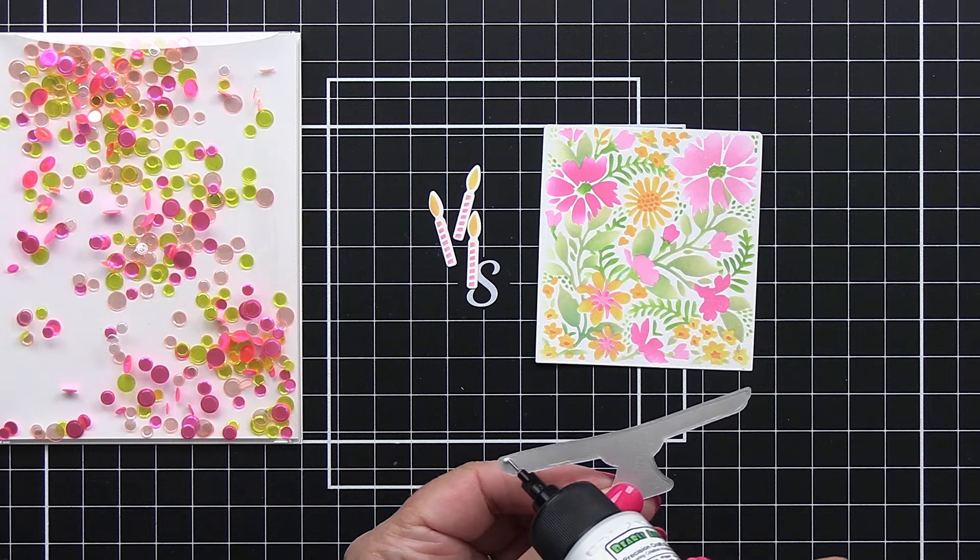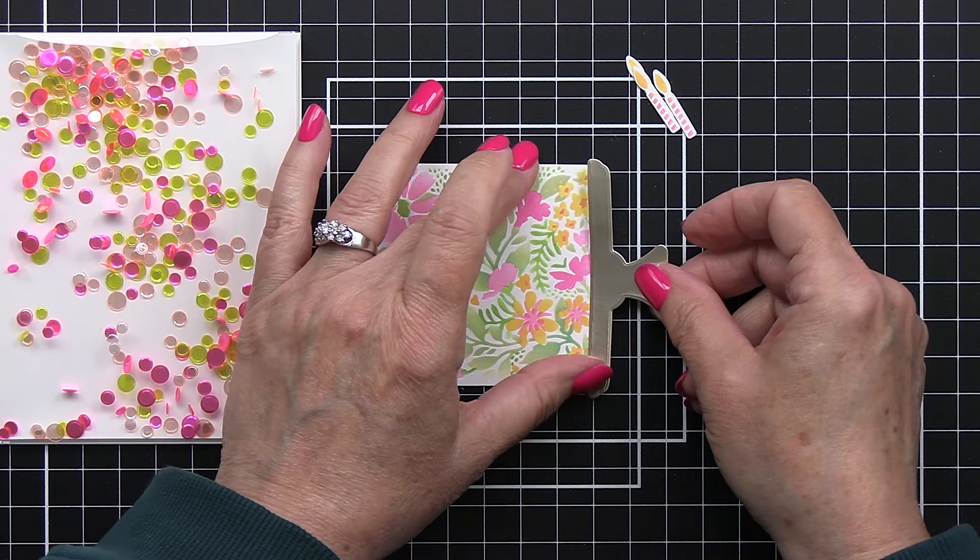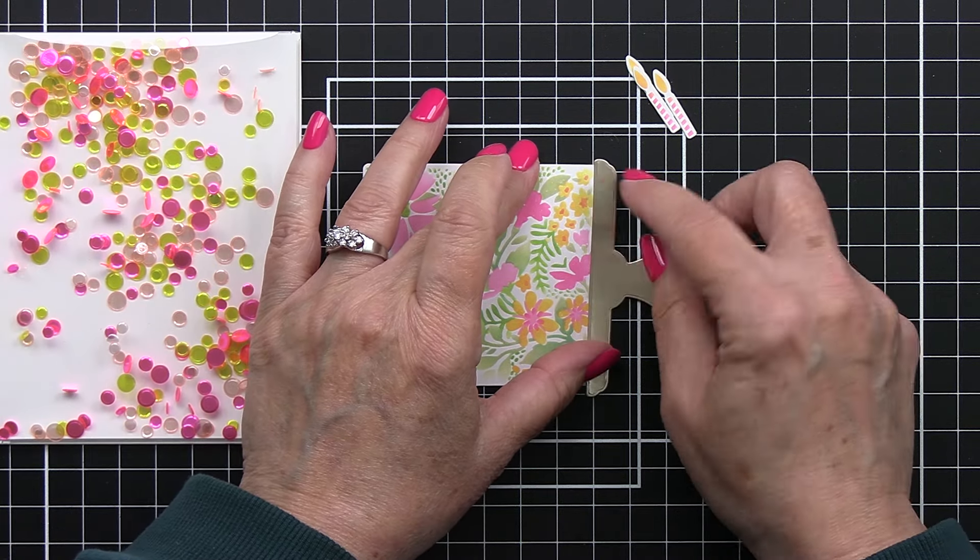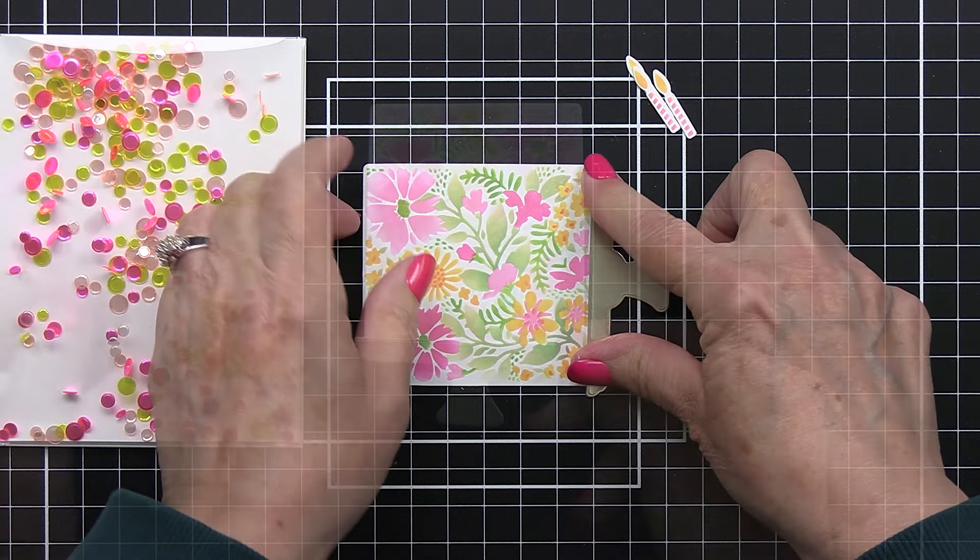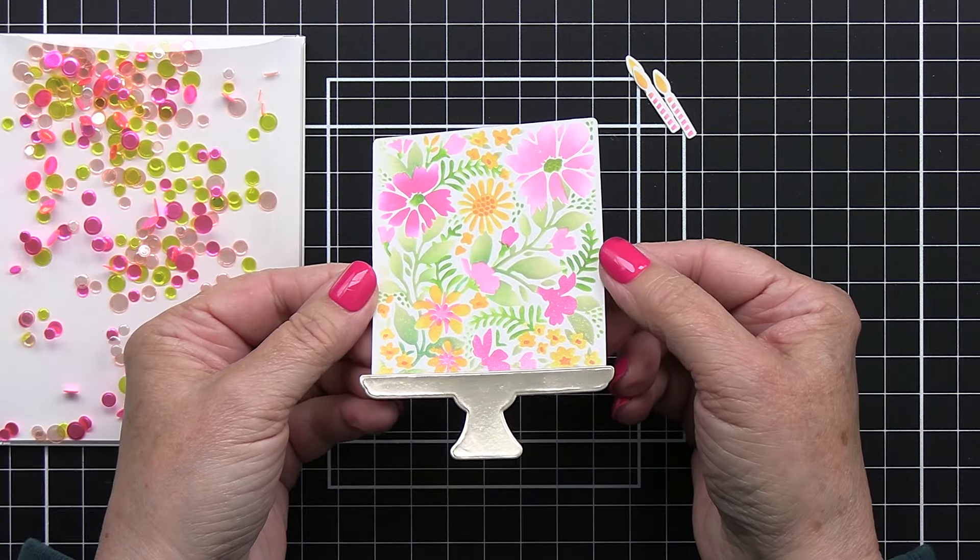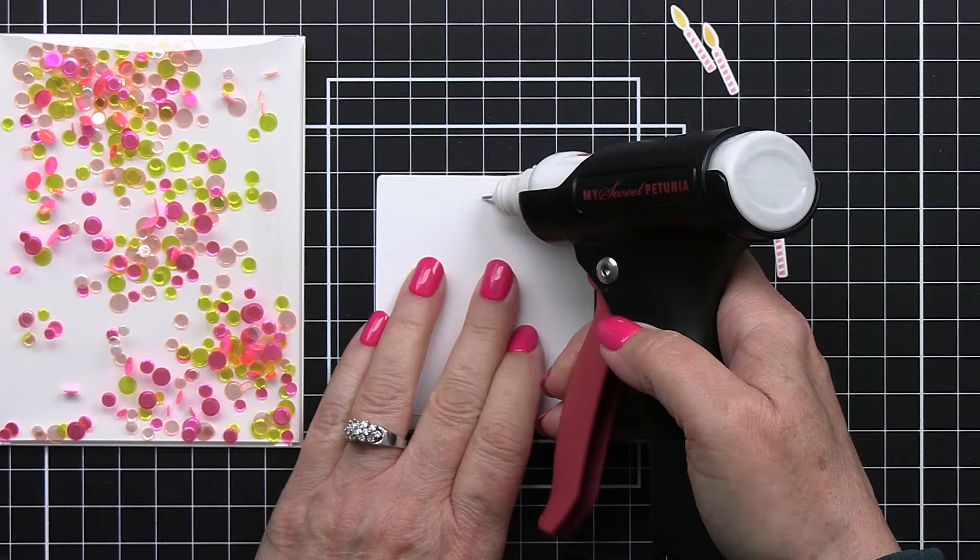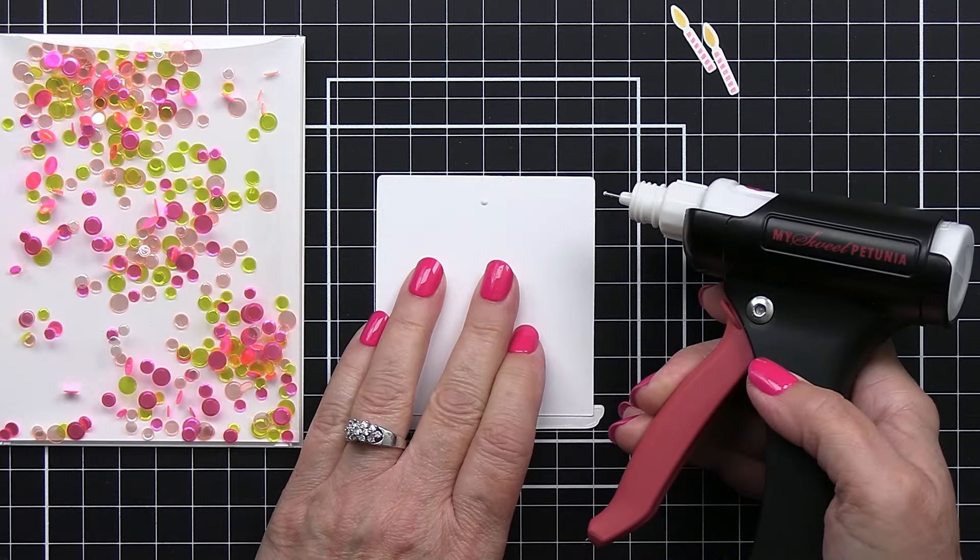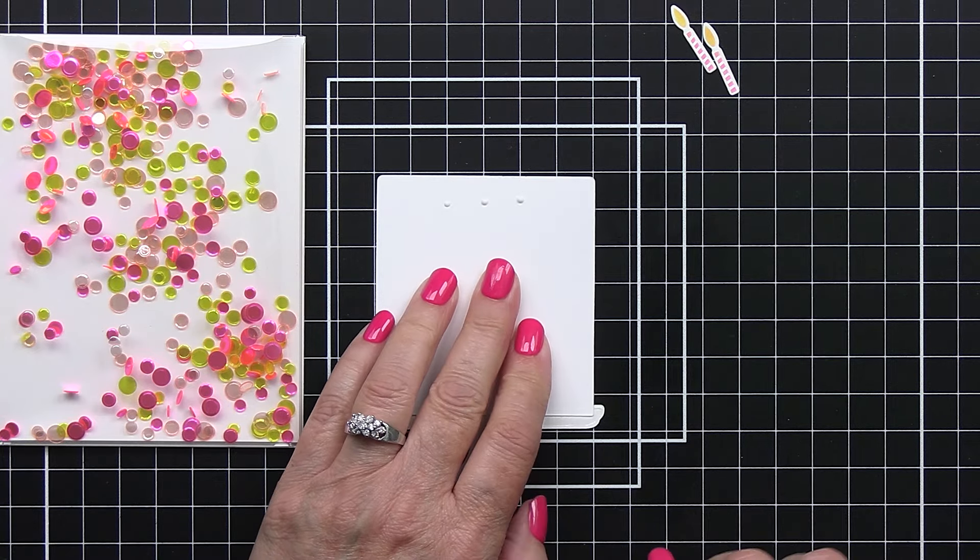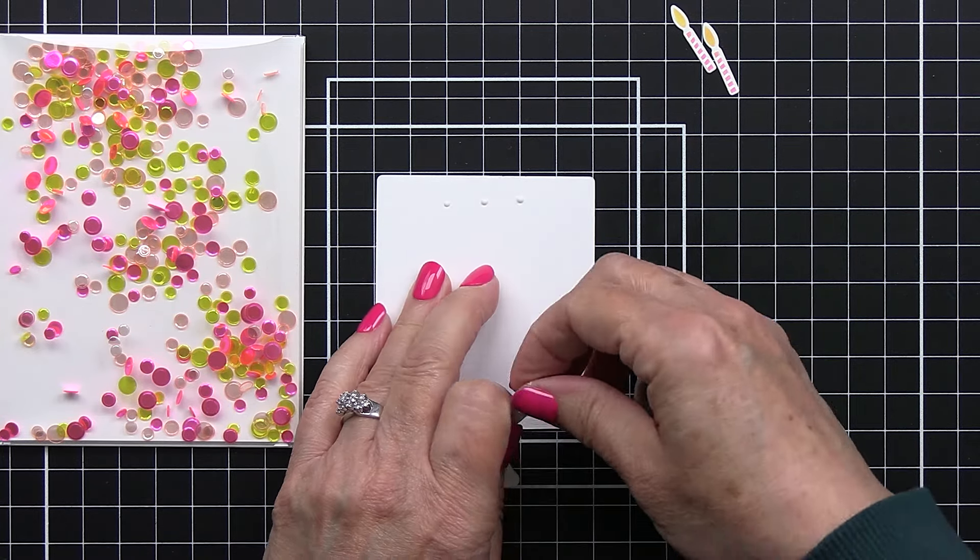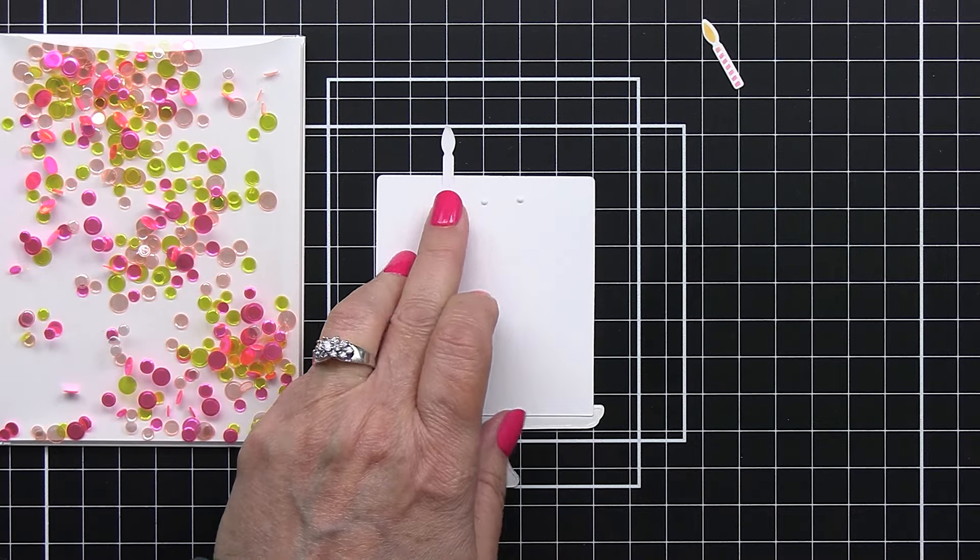Meanwhile I'll start to assemble the other elements for my card. So I'm going to add that cake stand to the bottom of my beautiful cake here and just give that a little press. Then I'm going to flip that over and add my candles onto the back of that and like I said before I'm only using three candles. I'm actually using the lines on my grid mat to help me see where I can line these up so that they're all perfectly centered and straight.